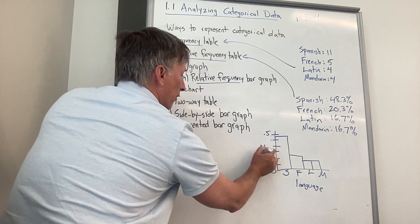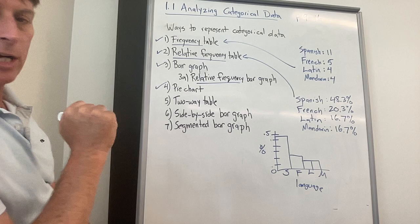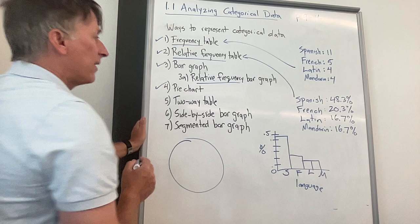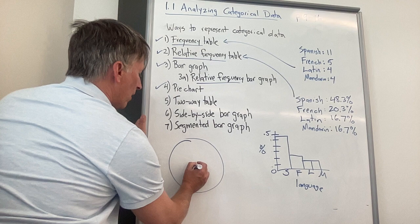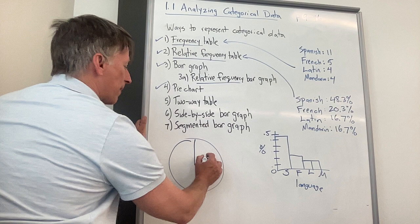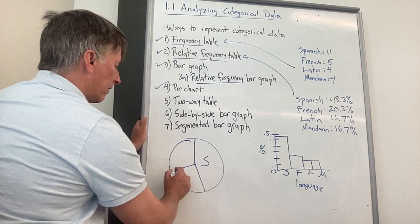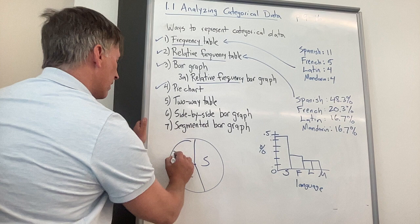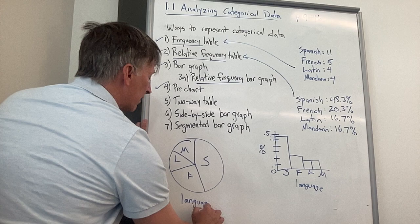Last thing I want to talk about is a pie chart. I think most of you have seen a pie chart before. I'm not going to spend too much time on this. You draw a nice big circle. There's your pie. Then the idea is you want to make some wedges that correspond to these relative frequencies. So I'm just going to do 48.3% is a little bit less than 50, so maybe like this. That's Spanish. French is about 20%. I'll do maybe like to there. That's French. And then I'll split this in two. Hopefully that looks a little bit smaller. Latin and Mandarin.